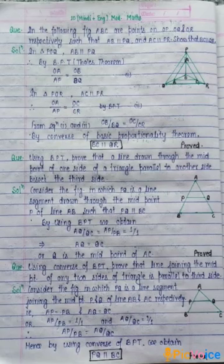Consider the figure in which PQ is a line segment joining the midpoint P and Q of line AB and AC respectively. We have taken PQ as a line segment that passes through P and Q, which are midpoints of AB and AC.